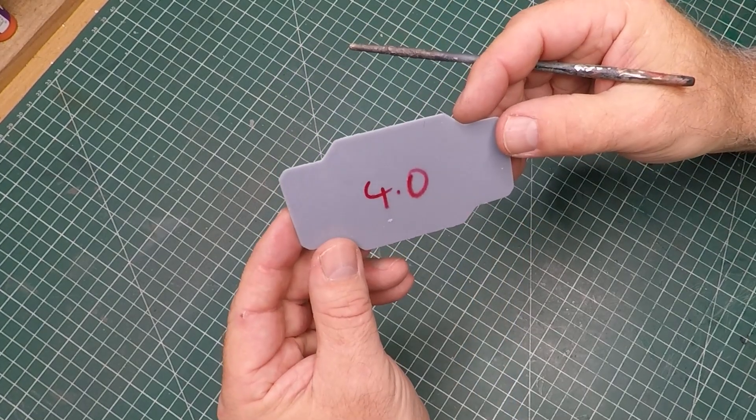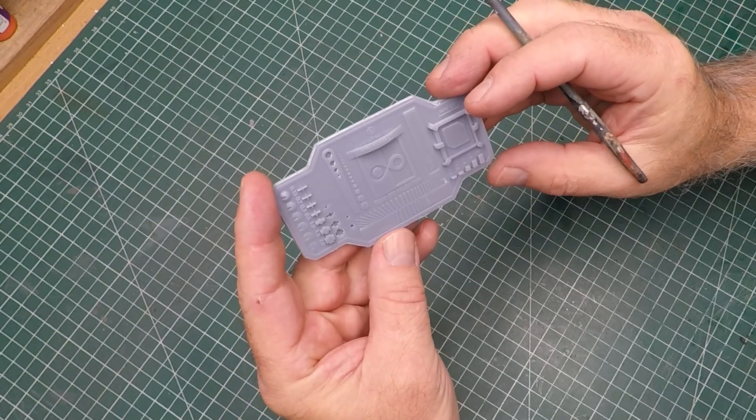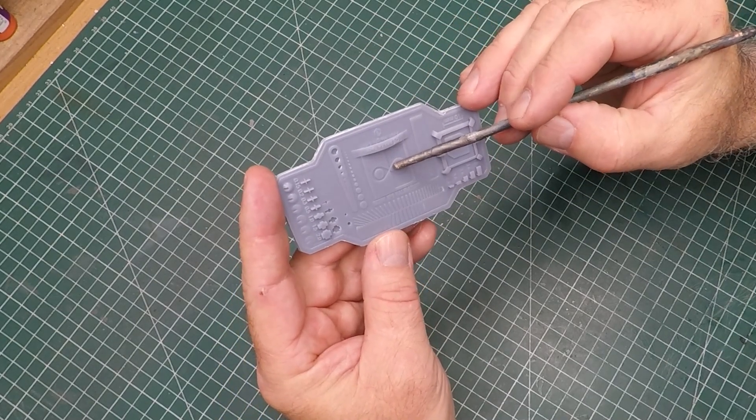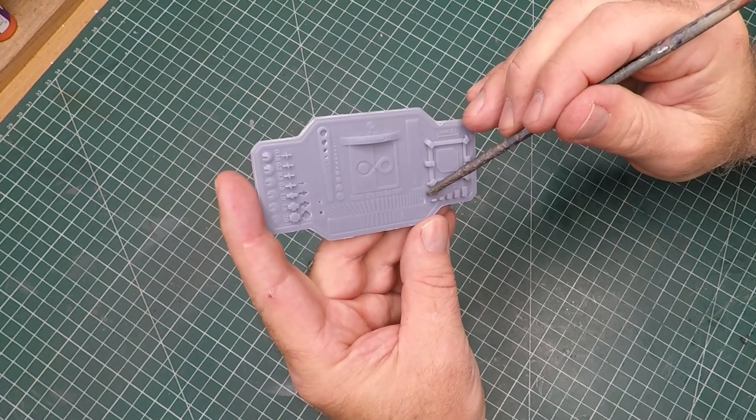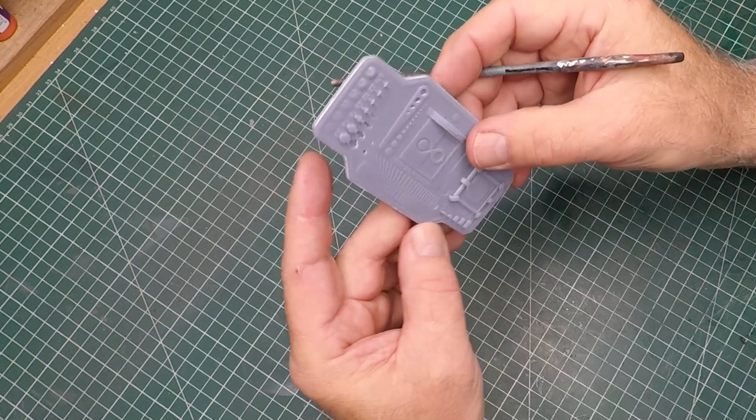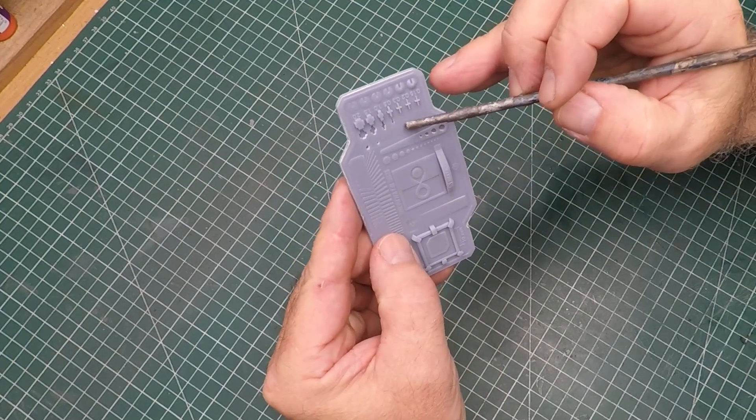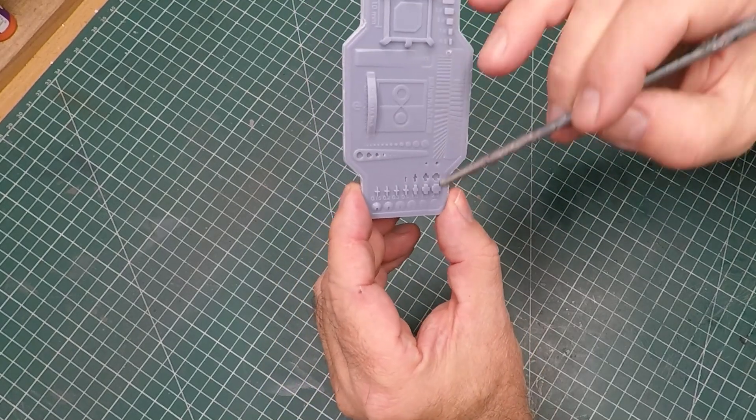Next test print was at four seconds and they only take about 30 minutes to print so very quick. Much better but I'm still kind of missing some bits and pieces there. The lines on both sides of that bar were missing, so not quite there yet.